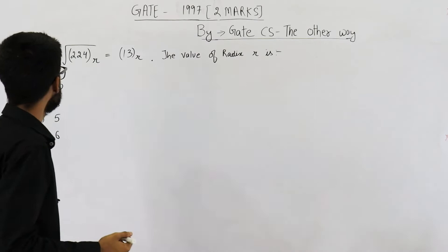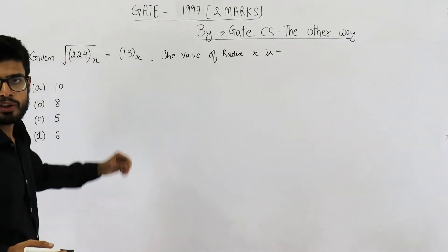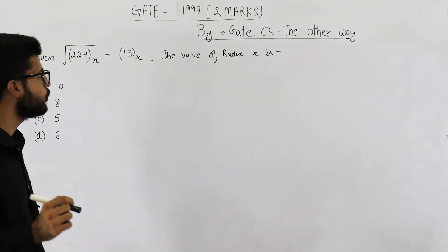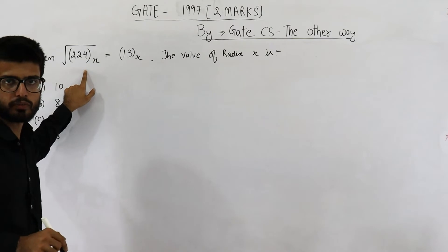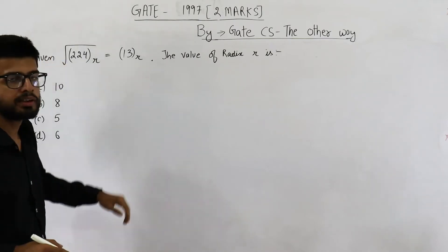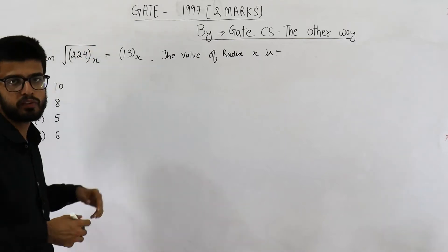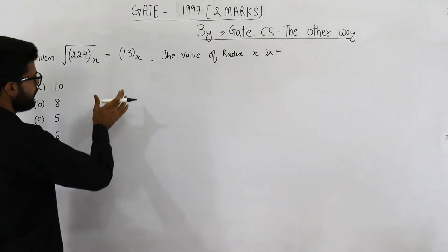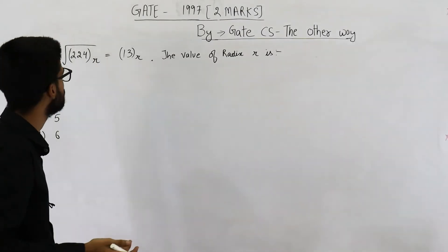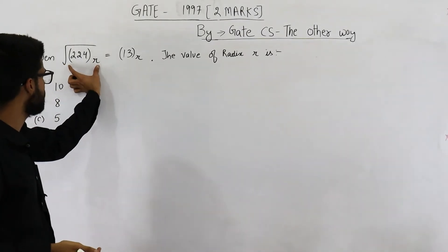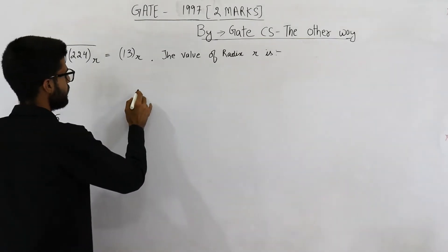Step one: convert this equation into such an equation in which you have this variable r. Here r is not a variable, r is base of the number system. So convert it into such an equation such that this r becomes part of the equation. That can be done by changing the base from r to base 10.